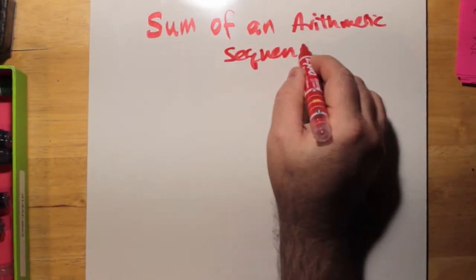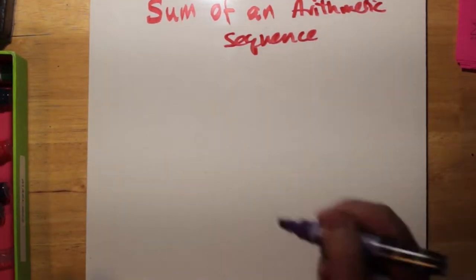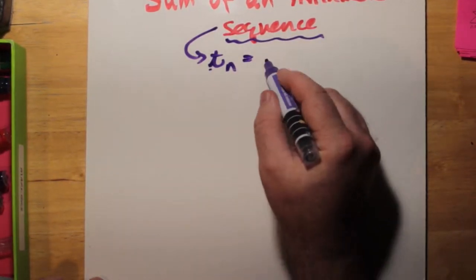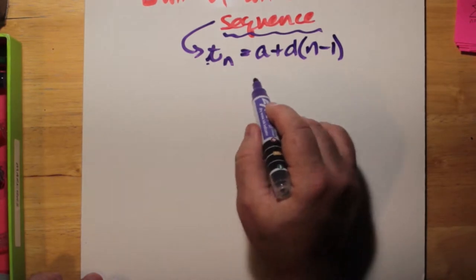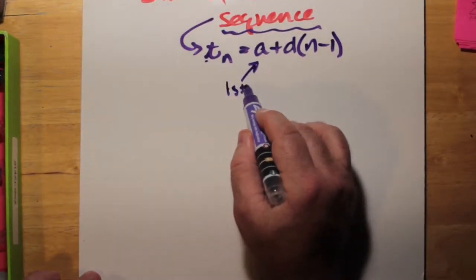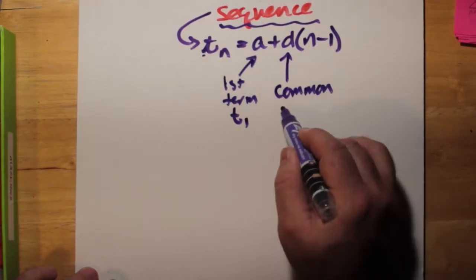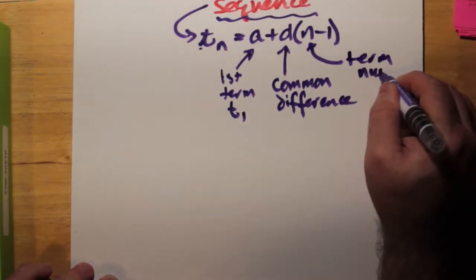Let's start off with arithmetic sequences. We can see the nth term in an arithmetic sequence: a plus d times n minus 1, where a is the first term or t1, d is the common difference, and n is the number of the term. It's what goes in the subscript of t. So you can have t1, t2, t3, and so on.